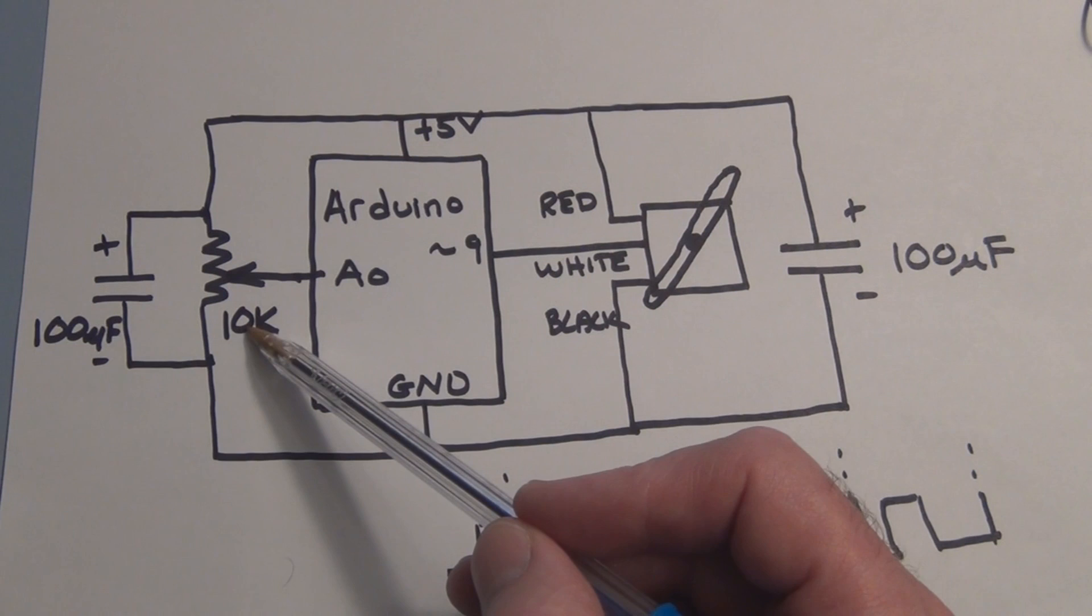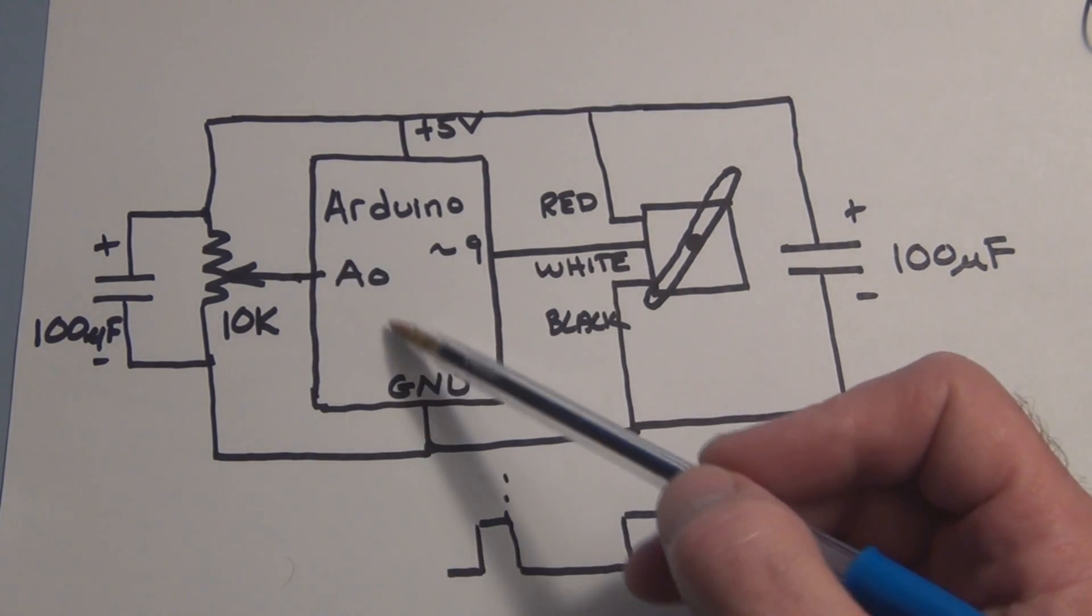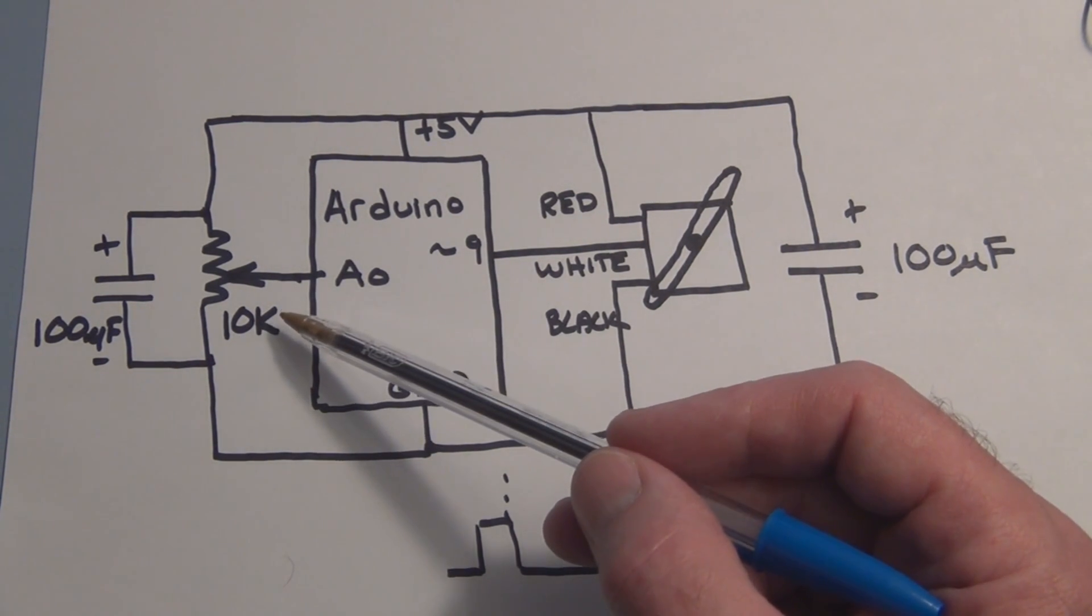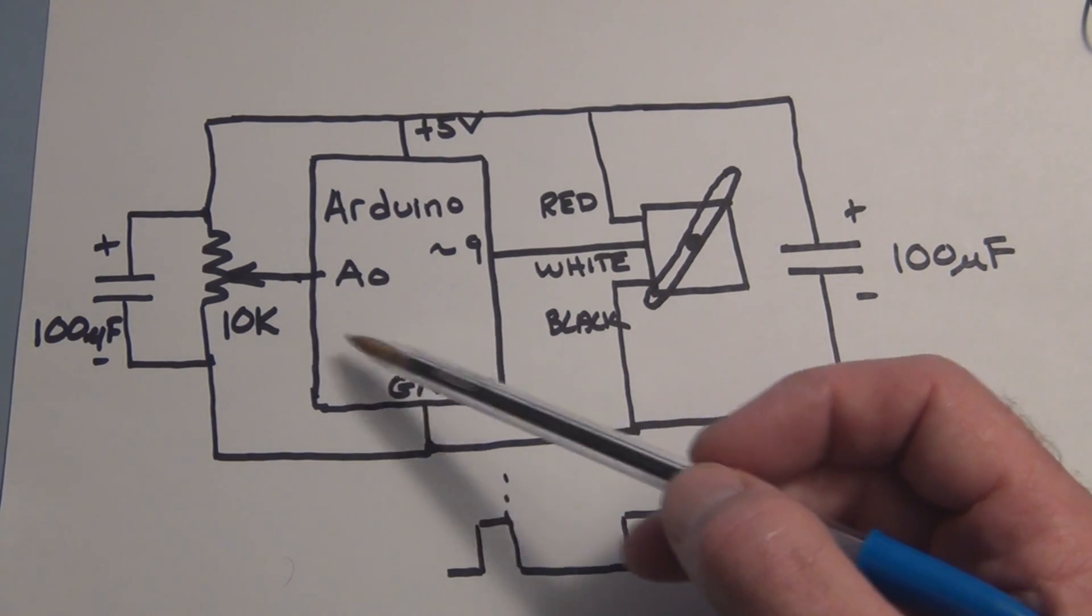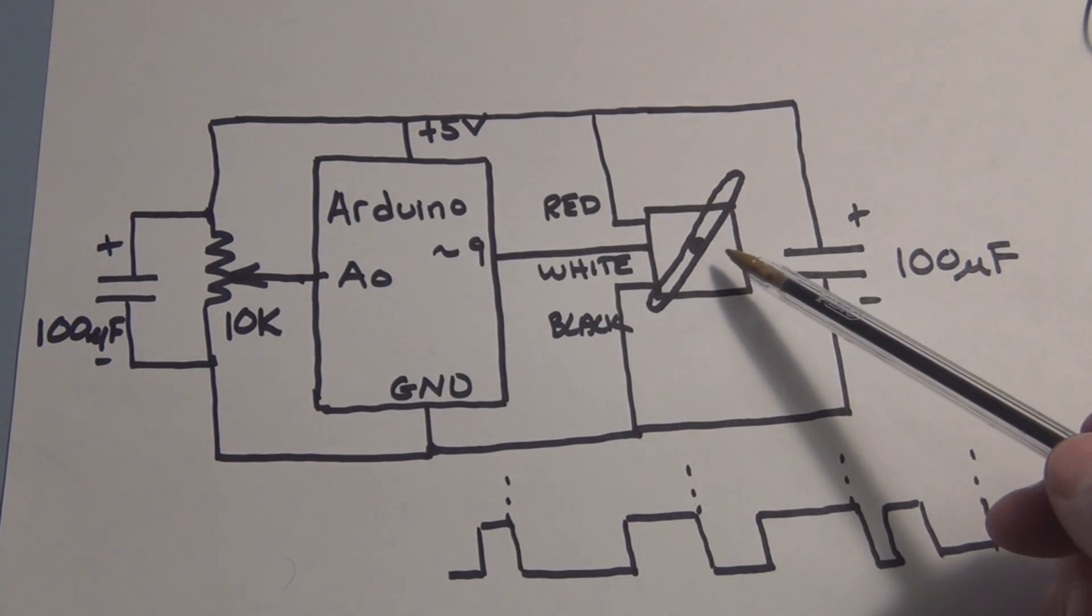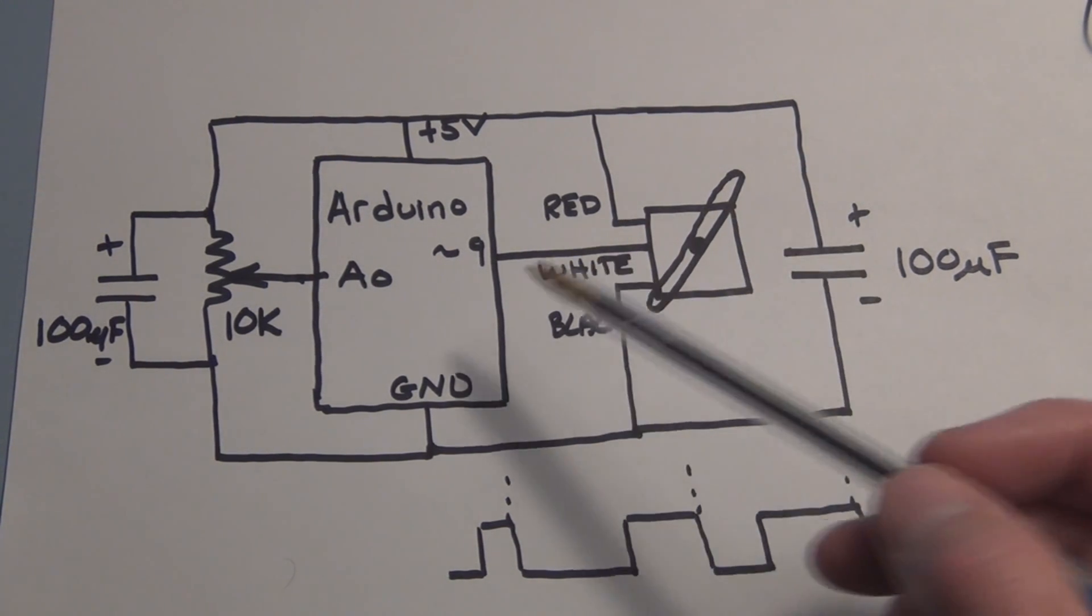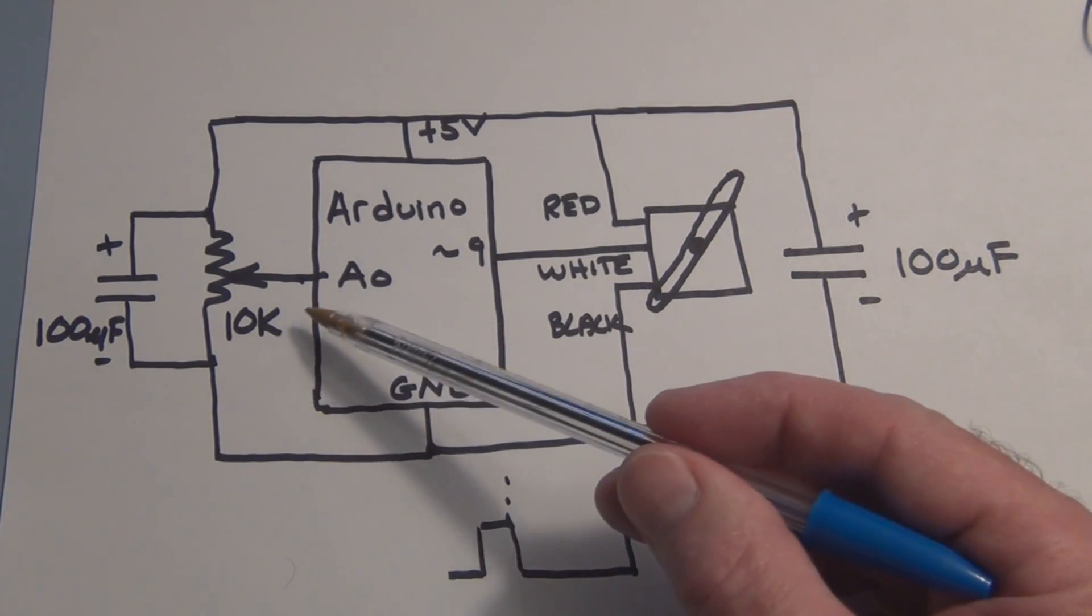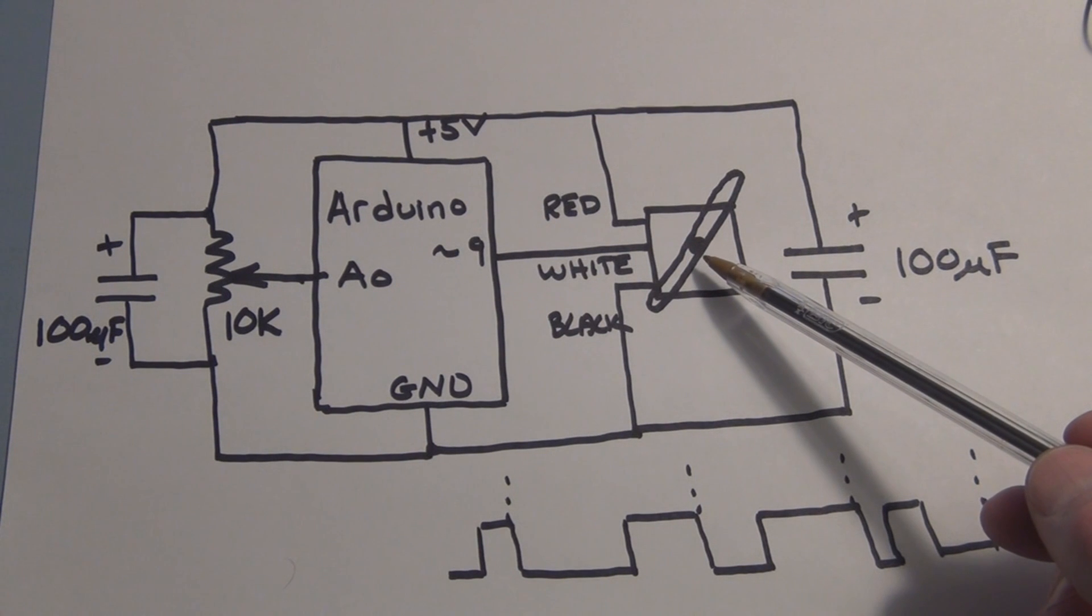And if you recall there's an onboard analog to digital converter that then converts that analog into a digital representation of a value between 0 and 1023. Well the servo is controlled with pulse width modulation so then we also have to convert that digital form of the analog voltage into something that the servo can recognize.